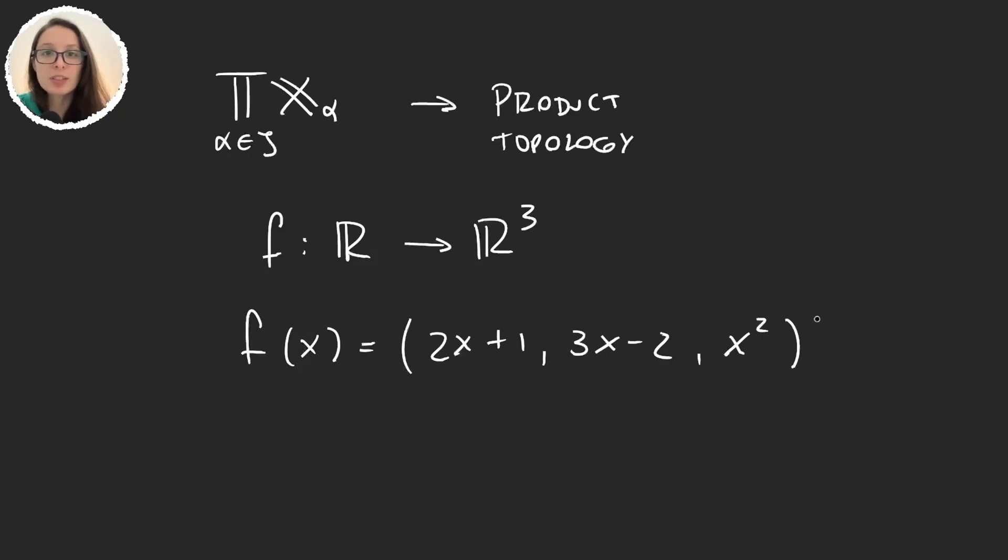Then you know that this function is continuous. And to see that it's continuous, using the definition of continuity is actually very complicated. But what we do in multivariate calculus is we say, let's call these functions f₁, f₂ and f₃. And we have a theorem that says that f is continuous if and only if f₁, f₂ and f₃ are all continuous. So when you look at these functions, each of these is obviously continuous, and so this implies that our function f is continuous.